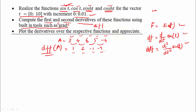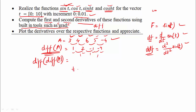We need to define time t from 0 to 10 with an increment of 0.01. That means t goes from 0 to 0.01, 0.02, 0.03, and so on. The step size is 0.01.